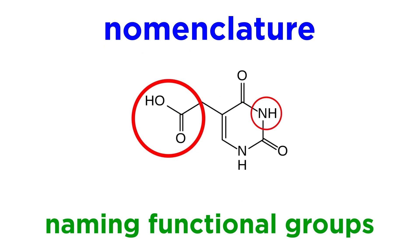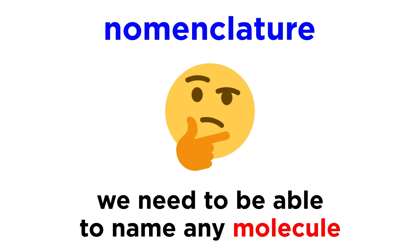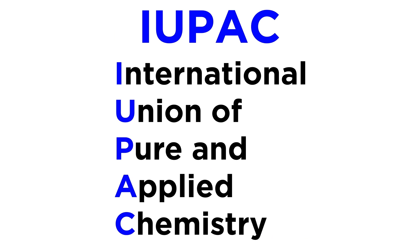Beyond just knowing the names of specific functional groups, or common groups of atoms that can be found on a molecule, we need a system by which we can take any molecule imaginable, whether real or hypothetical, and give it a very specific name, such that any other chemist could read that name and draw out the precise molecule in question. This system will require rules, and those rules have been constructed by the IUPAC, or the International Union of Pure and Applied Chemistry.